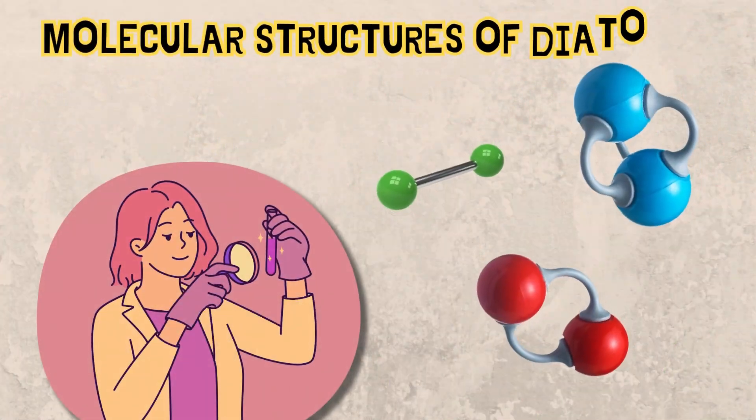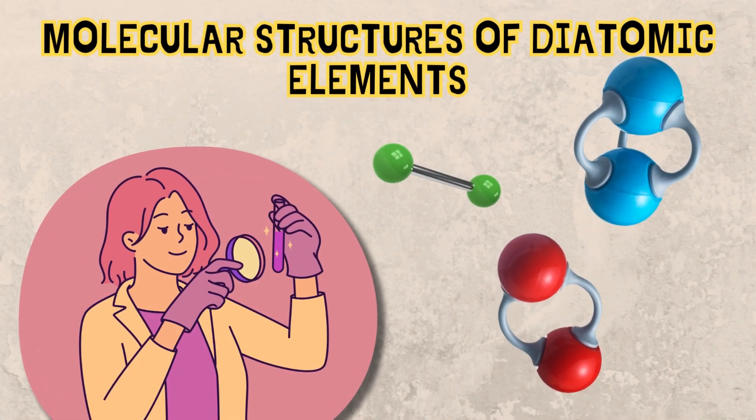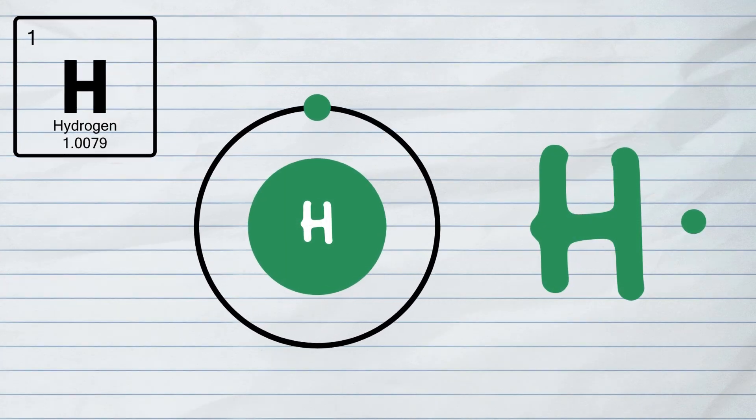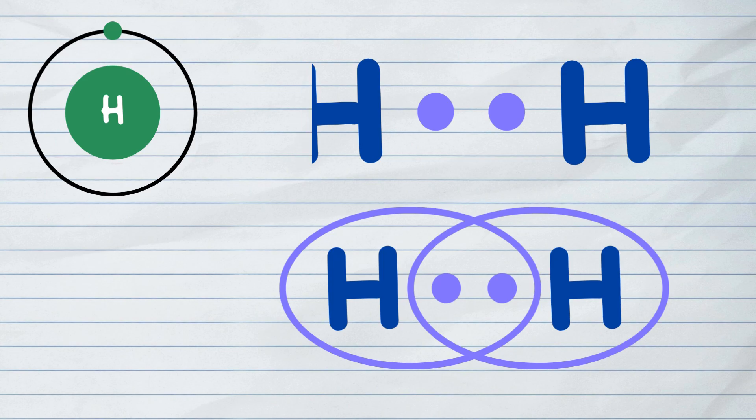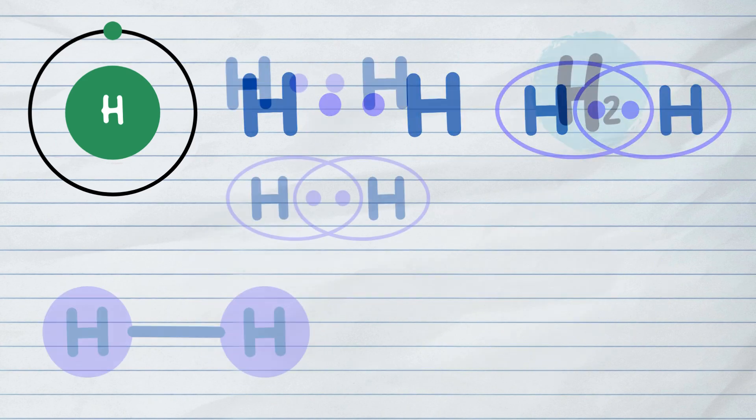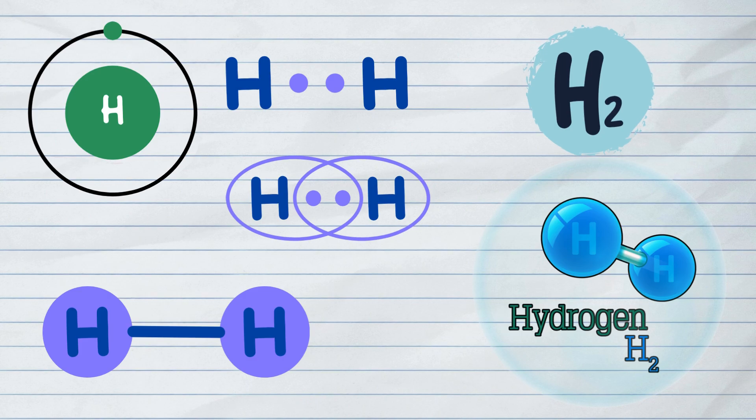Let us look at the molecular structures of the diatomic elements. Since hydrogen has one valence electron, two hydrogen atoms will share their electrons to form a single covalent bond, thus forming a stable H2 molecule.